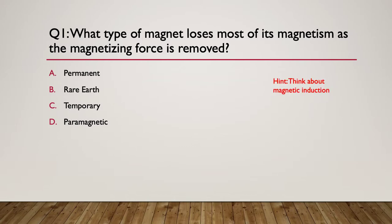Here's your hint: think about magnetic induction. When you learned about magnetic induction, what was happening? The answer is a temporary magnet. Anything that comes under the influence of a magnetizing force that concentrates or helps to concentrate the magnetic lines of flux becomes a temporary magnet.